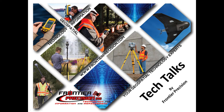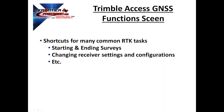Hi, I'm Jay Haskamp and I'd like to welcome you to another Tech Talk by Frontier Precision. Today's session we are going to go through all the available tools on the Trimble Access GNSS Functions screen. The GNSS Functions screen offers users shortcuts to many of the common RTK tasks that we need to use in the field, such as starting and ending surveys, changing receiver settings and configurations, and some other options that we will look at. Let's take a look at this screen and see what we can do.